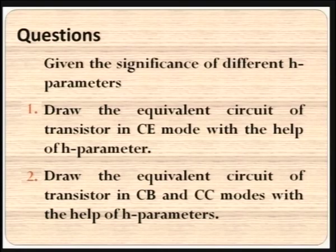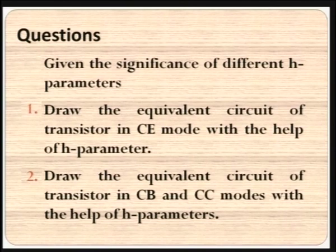In this session, we have seen the significance of H parameters, the transistor equivalent circuit, the H parameters for CB and CC modes, and how we could migrate from one mode to another using H parameters. The review questions are: Give the significance of different H parameters. Draw the equivalent circuit of a transistor in CE mode with the help of H parameters. Draw the equivalent circuit of transistor in CB and CC modes with the help of H parameters. Thank you for listening.